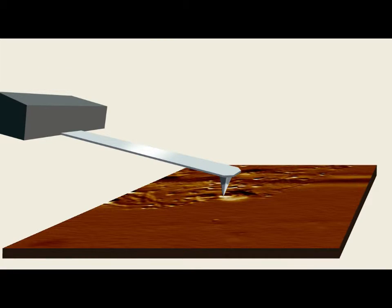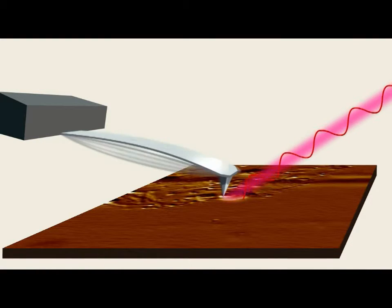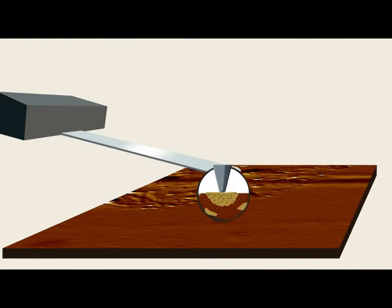We bring our cantilever tip down and start sending pulses of infrared radiation at the apex of the tip, at the sample in the region that we are interested in.